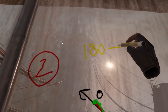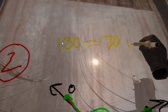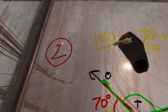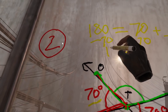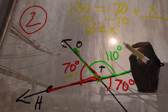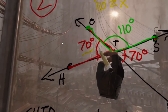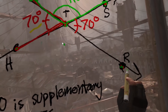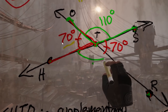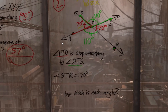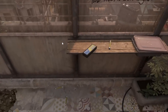We can find angle OTS because we know it and angle HTO are supplementary and together equal 180 degrees. So: 180 equals 70 plus x. Subtract 70 from both sides: x equals 110 degrees. So this angle is 110 degrees. The last angle — HTR, or RTH — is vertical to OTS, so it's also identical: 110 degrees. We've solved all the angles.